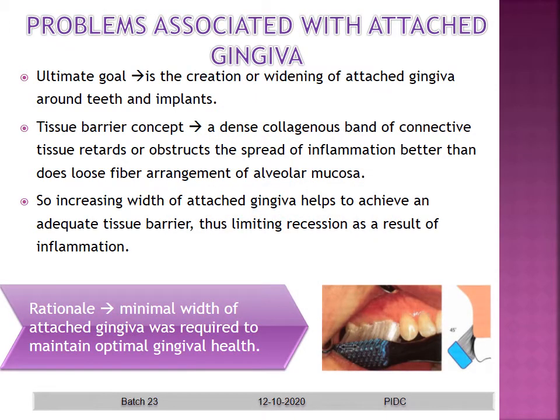First, problems associated with attached gingiva. The ultimate goal of Mucogingival Therapy is the creation or widening of attached gingiva around teeth and implants. The tissue barrier concept by Goldman states that a dense collagenous band of connective tissue retards the spread of inflammation better than a loose fiber arrangement of alveolar mucosa. Increasing the width of attached gingiva helps achieve an adequate tissue barrier, limiting recession as a result of inflammation.